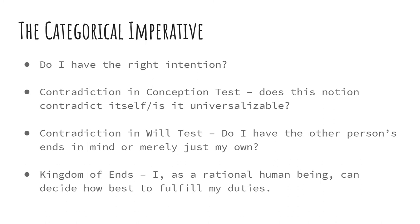Going back one last time, the full extent of the categorical imperative — what is required of us as human beings to fulfill our obligations — involves four standards: I have to have the right intention; I cannot contradict the notion of goodness, meaning my actions have to be universalizable; I cannot contradict the will of other people and must have their ends in mind, not just my own; and as a rational human being I can decide how best to fulfill my duties and meet my ends.